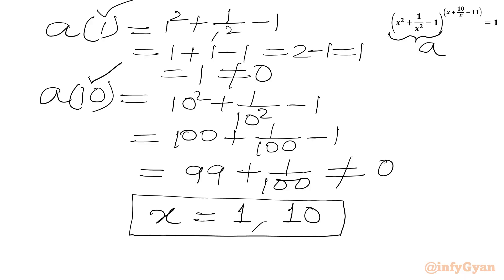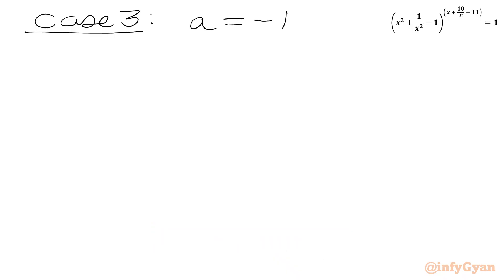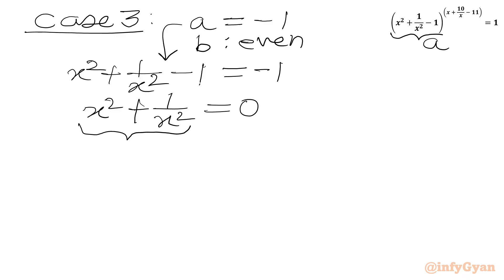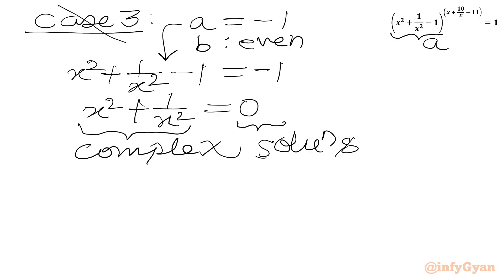Now for case 3, the base a equals negative 1 and the power should be an even number. Setting x² + 1 over x² − 1 equal to −1 and adding 1 to both sides, we get x² + 1 over x² equal to 0. This is a sum of two squares equaling 0, which gives only complex solutions. So case 3 is rejected.